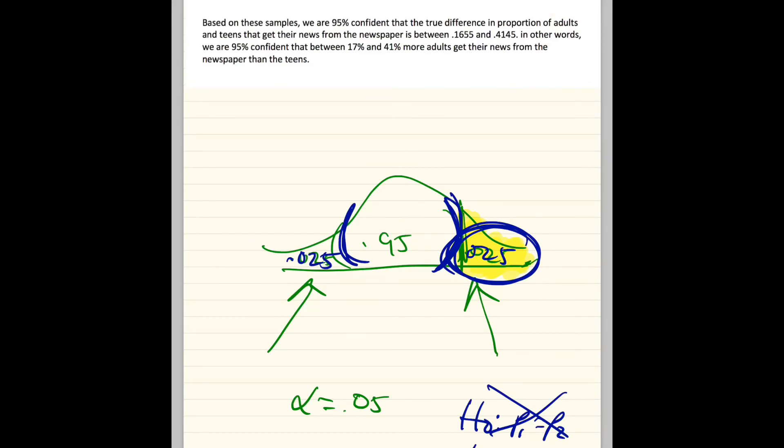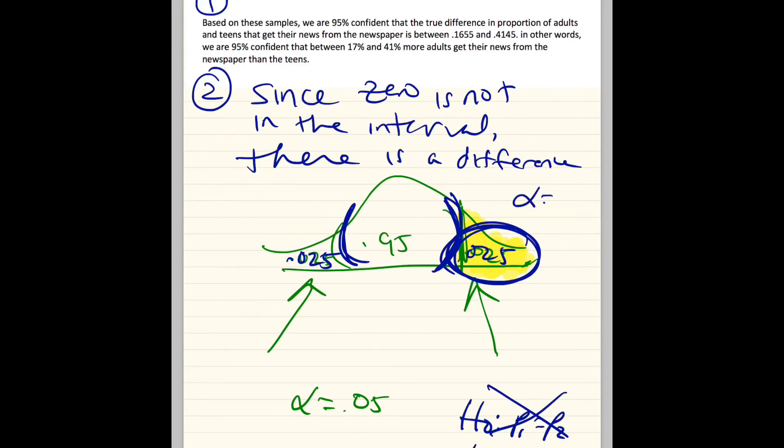This is our first statement and our second statement is since 0 is not in the interval, there is a difference. But I prefer to say there's more adults read the newspaper than teens. And so that's why I'm just going to change alpha from our typical 0.05 to 0.025 because more than means only choose one side. There is a difference means you've got to use the total of these. So that's pretty much how we do it.